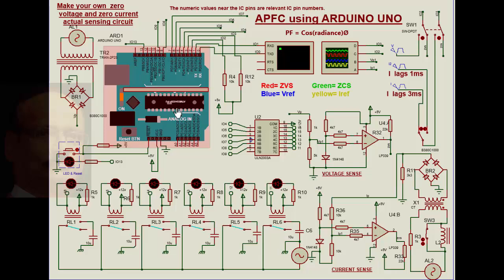We have an Arduino here as the main controller. For the purpose of getting a voltage reference, we have a step-down transformer from 230 to 12 volts. We have a bridge rectifier which is giving pulsating DC — this is not filtered, only pulsating DC. That pulsating DC, VVP, comes here.